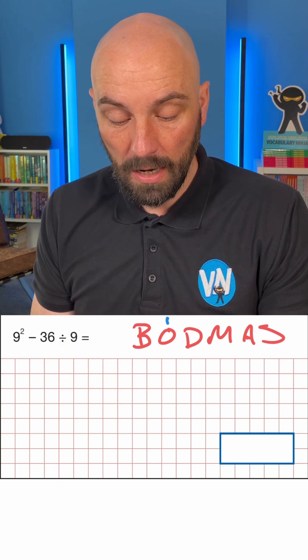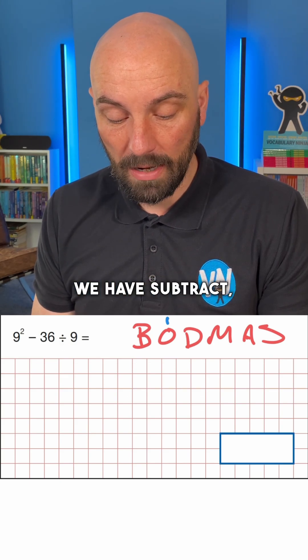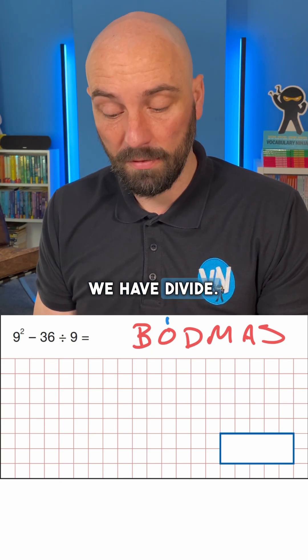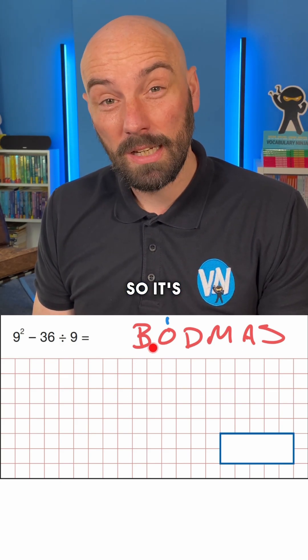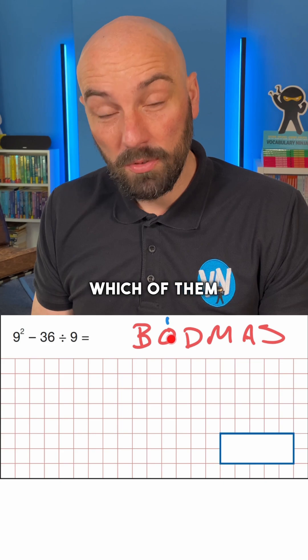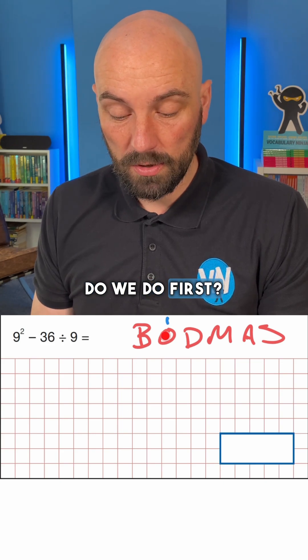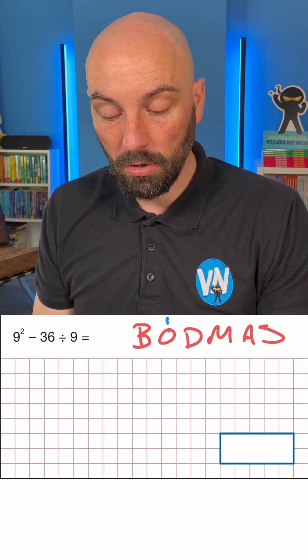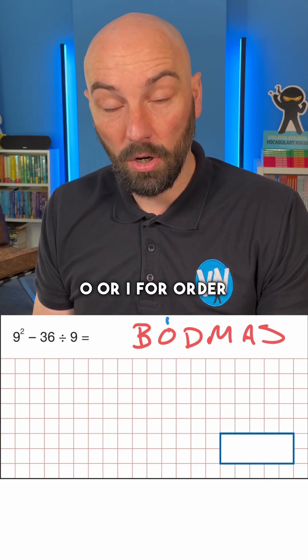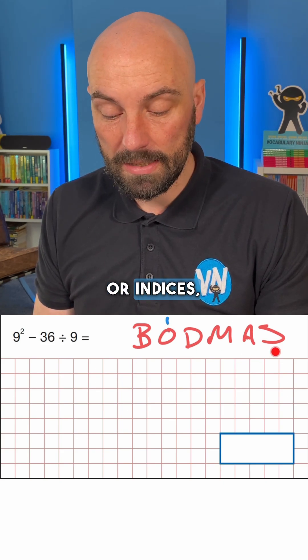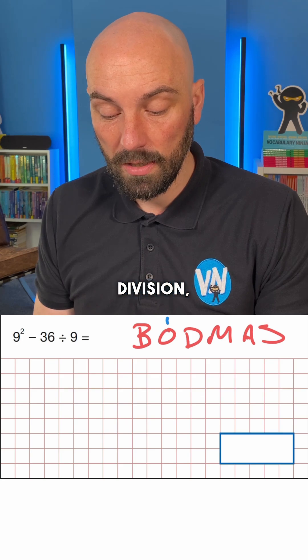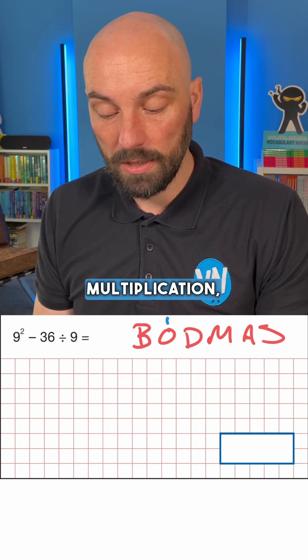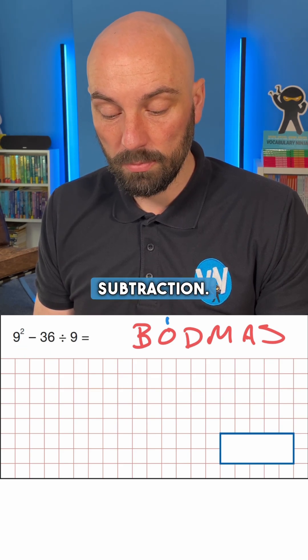So here we have a squared symbol, we have subtract, we have divide. Which of them do we do first? The B stands for brackets, O or I for order or indices, D for division, then multiplication, addition, and subtraction.